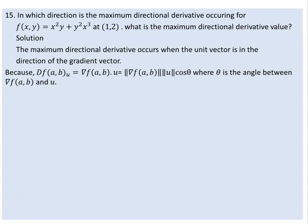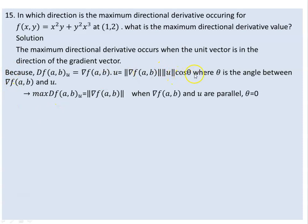If the angle between u and the gradient is theta, the dot product of the two vectors can be the norm of the first one times the norm of the second, which is actually one times cosine of the angle between the two.